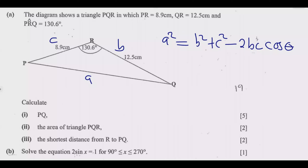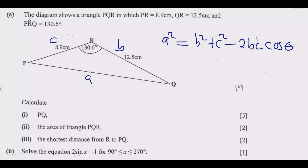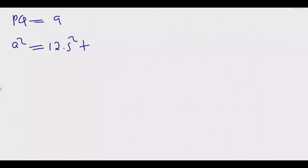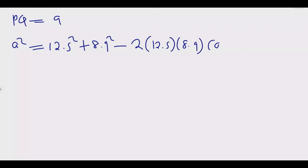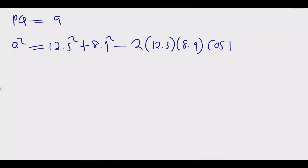Based on this, we can find PQ. So A squared equals B squared plus C squared minus 2BC·cos(theta). Here B is 12.5 and C is 8.9, giving us 12.5 squared plus 8.9 squared, minus two times 12.5 times 8.9 times cosine of 130.6 degrees.